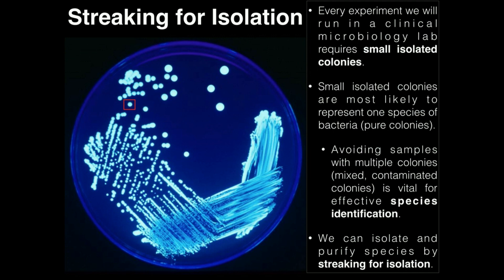A small isolated colony is most likely to represent one species. There could be a bunch of species of bacteria present, but small isolated colonies are just most likely to represent one — they're the purest of probably anything on the plate. If we were to use a sample from the concentrated region, we would probably have a mixed or contaminated colony, and we can't have that. Pure colonies are vital for effective species identification, which is what we'll be doing in the practicum week at the very end of the semester. One way we can isolate and purify species is by streaking for isolation.